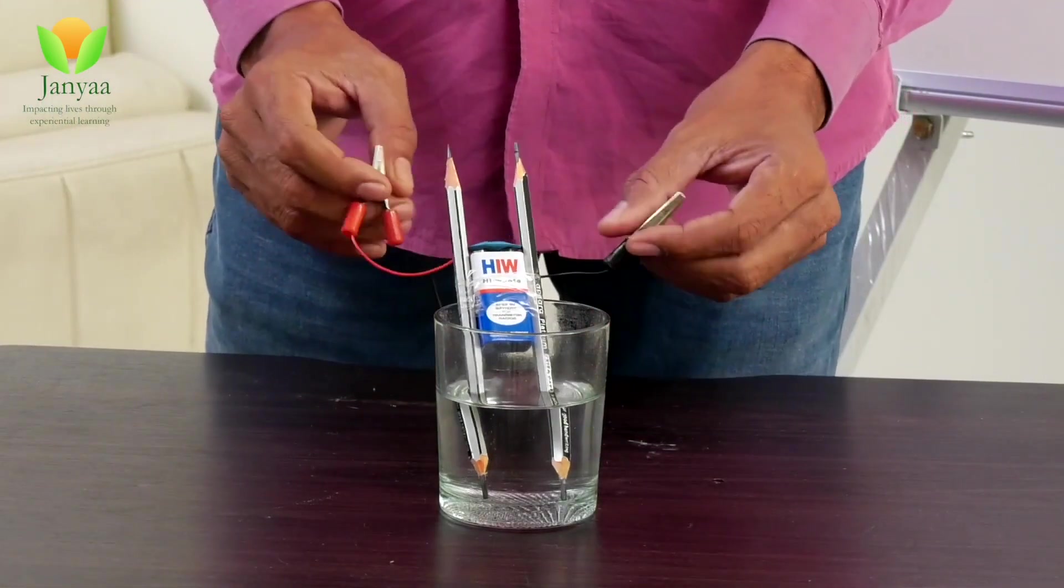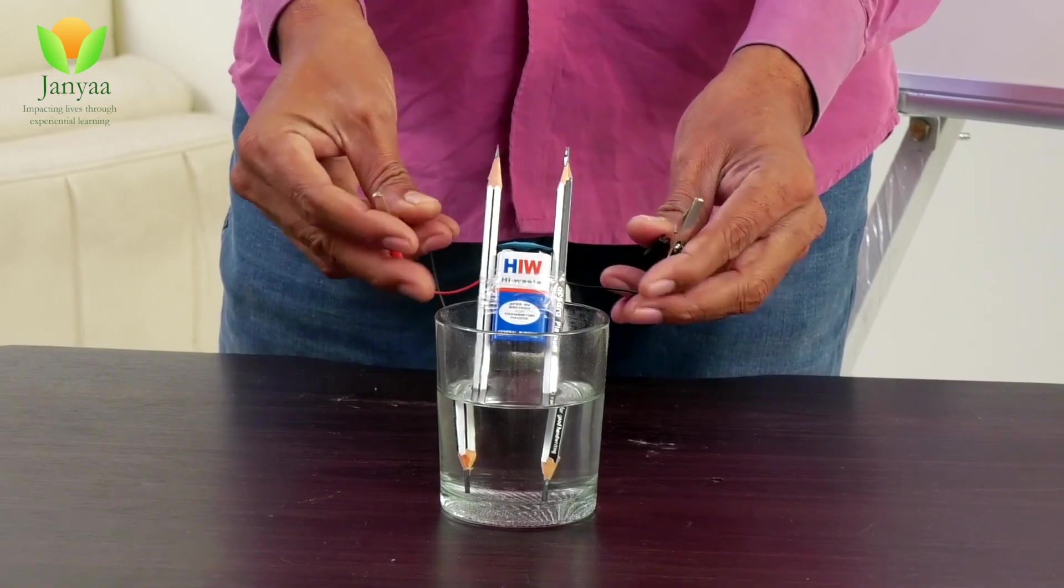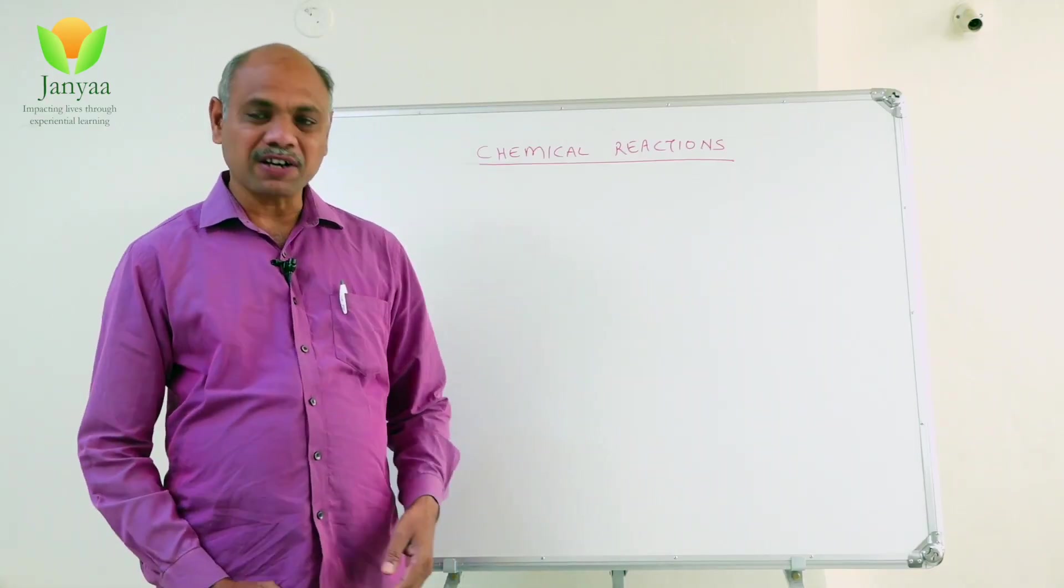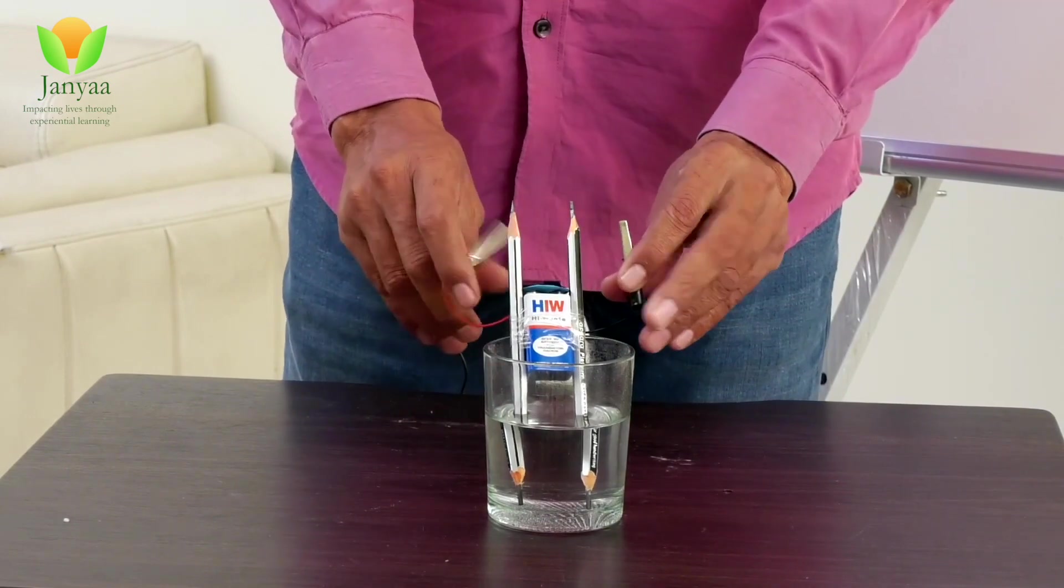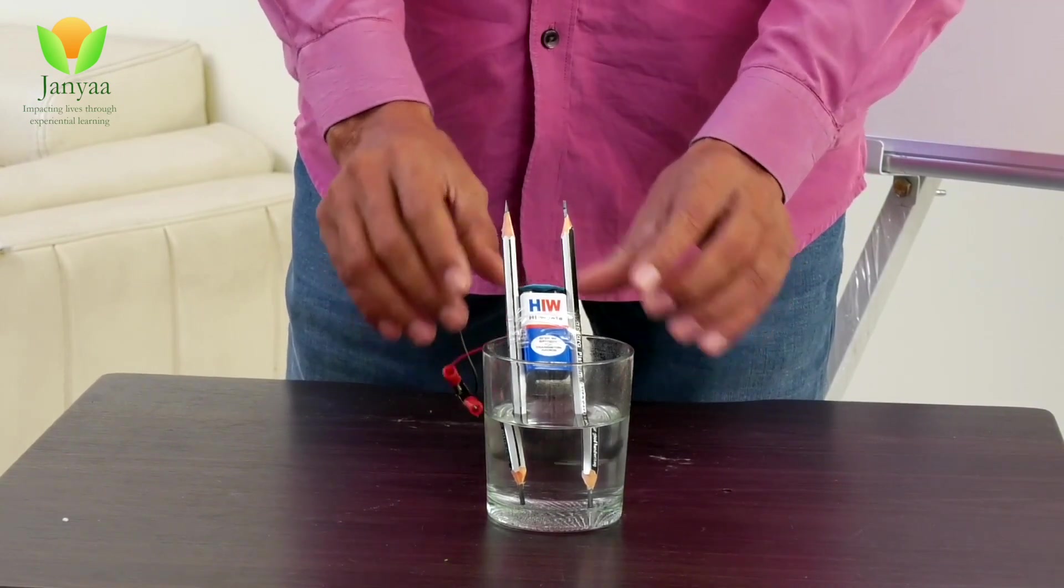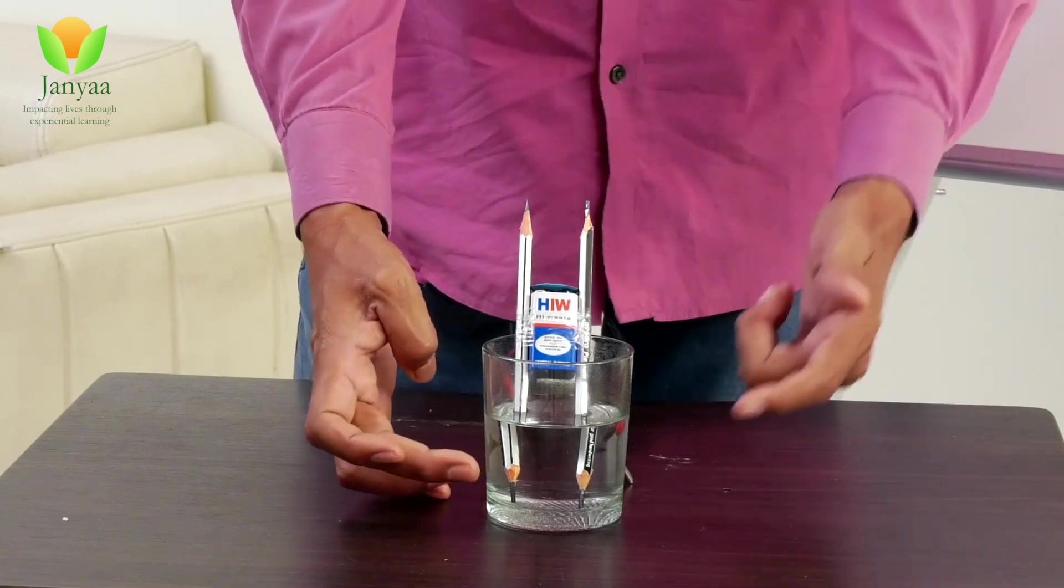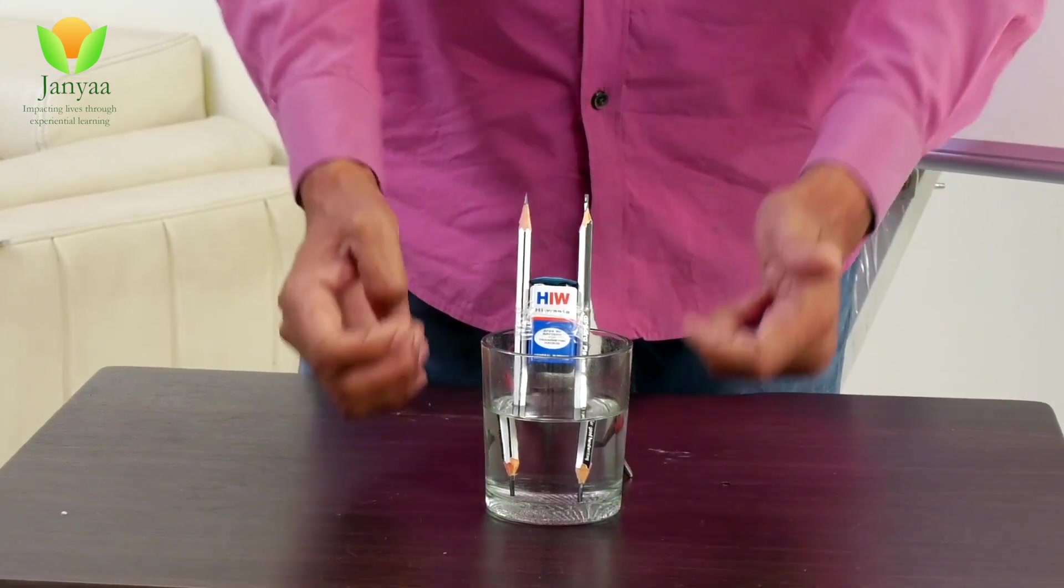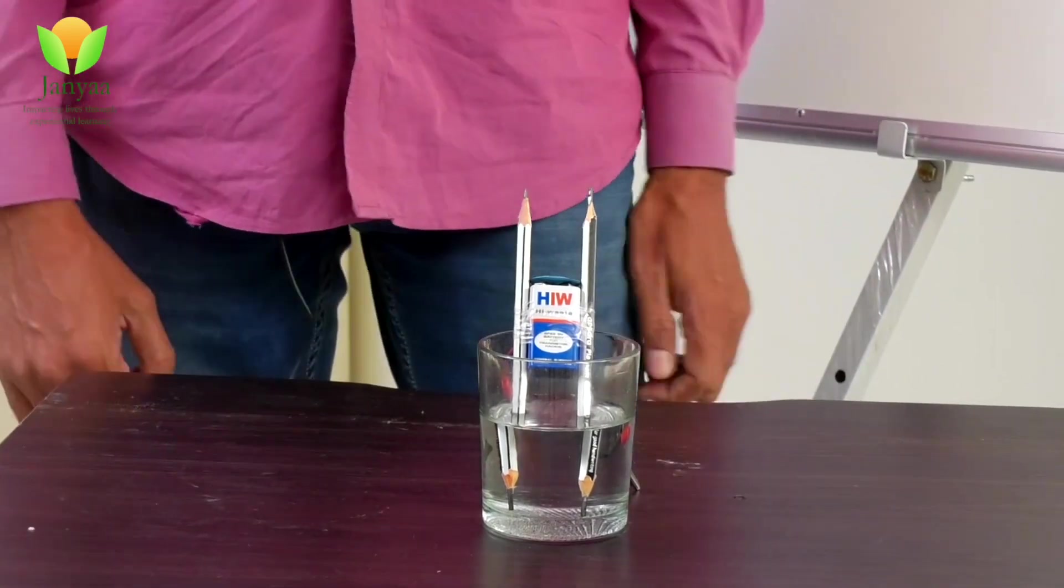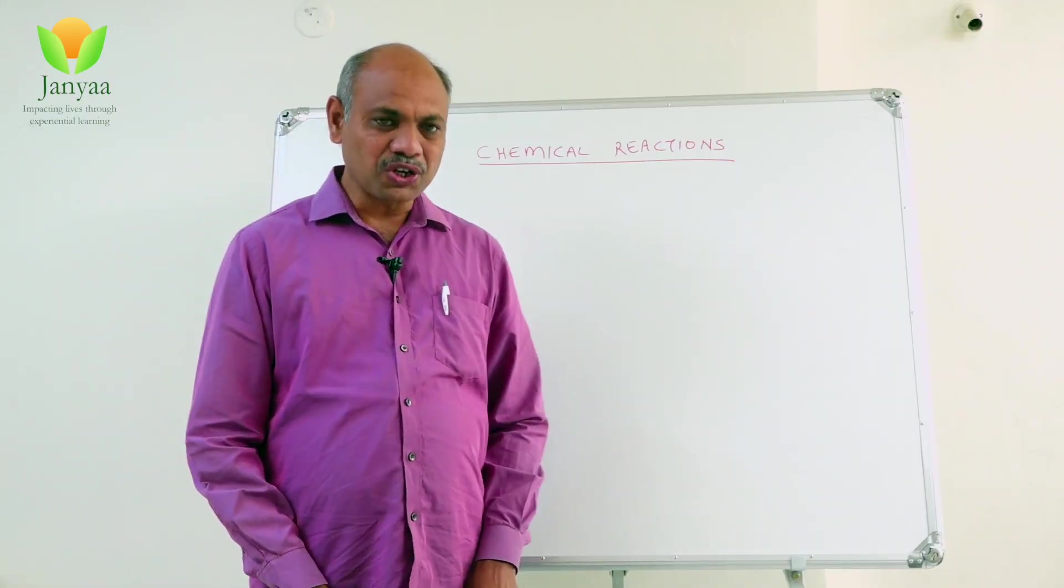pencils which are sharpened to get the lids out because graphite is a good conductor of electricity, and I used two crocodile clips. Now, you observe the beaker. These crocodile clips are not connected to the graphite rods.